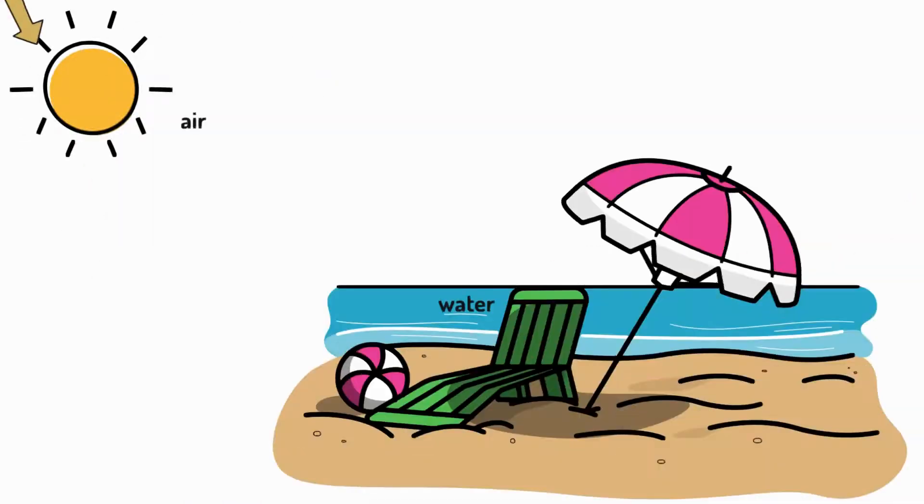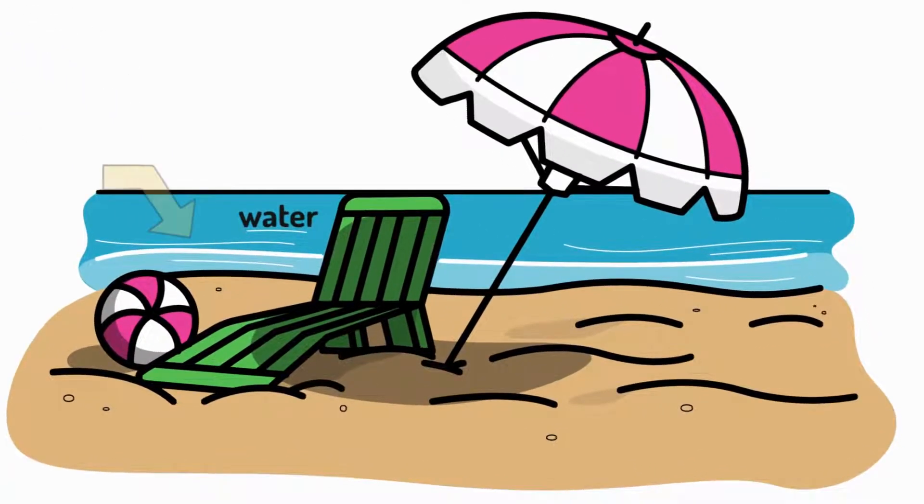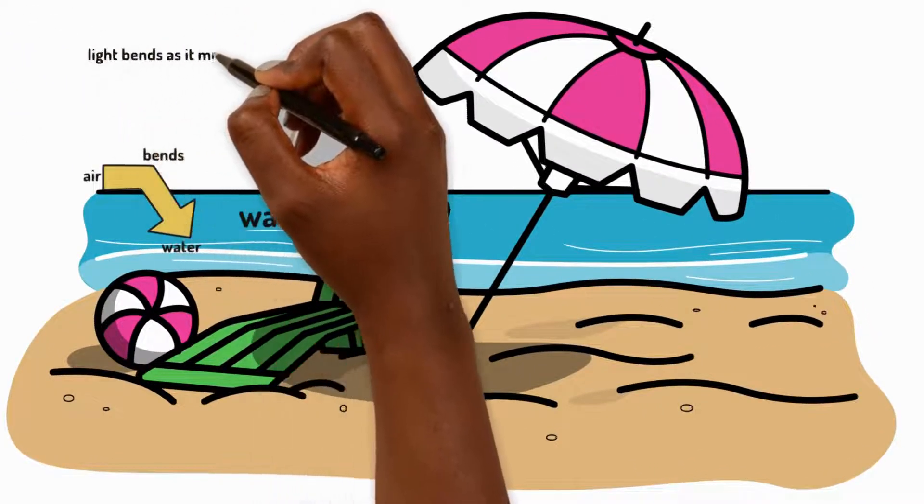As light moves, sometimes it travels from one material to another. When light moves from one material to another, it can change its speed but it can also change direction. We say that the light is bent.